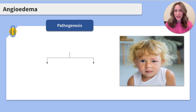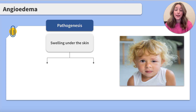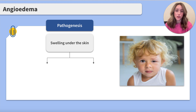Starting from the beginning, what even is angioedema? It's a condition characterized by swelling under the skin. This swelling is typically seen around the eyes and lips, but it can also affect the throat, hands, feet, and genitals.